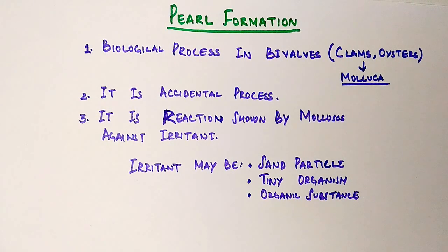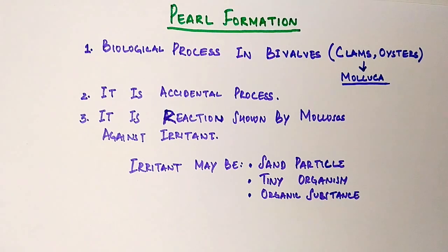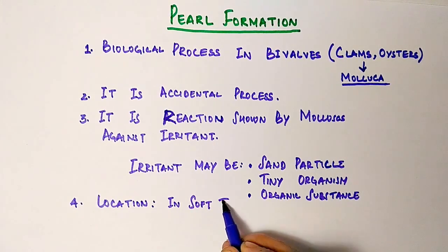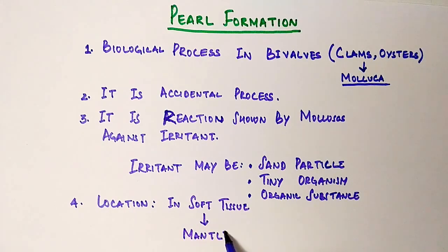So this irritant can create a reaction in these organisms with which this pearl is formed. Another thing is the location. This pearl is formed in the soft tissue of this organism what we call as mantle. Now let's see how it occurs.